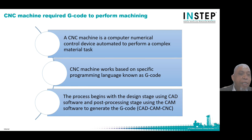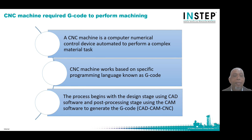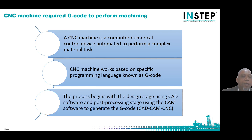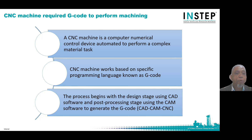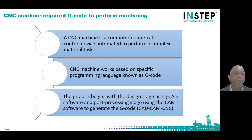A computer numerical control (CNC) machine is a computer numerical control device automated to perform complex material tasks. CNC machines work based on a specific programming language known as G-code. The process begins with the design stage using computer-aided design (CAD) software, and post-processing stage using computer-aided manufacturing (CAM) software to generate the G-code — CAD, CAM, CNC. CNC machines require G-code to perform machining.